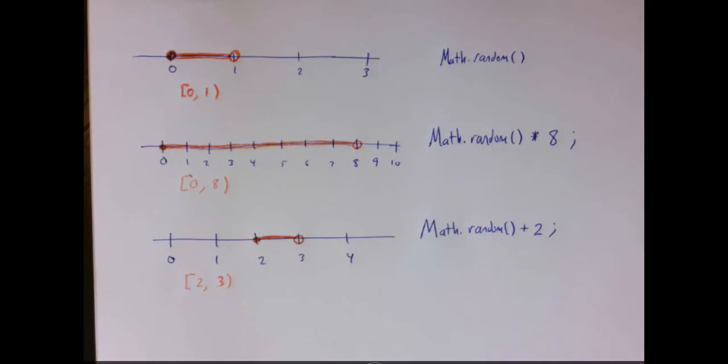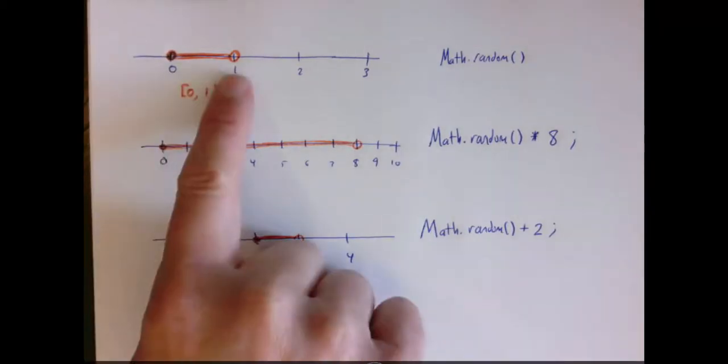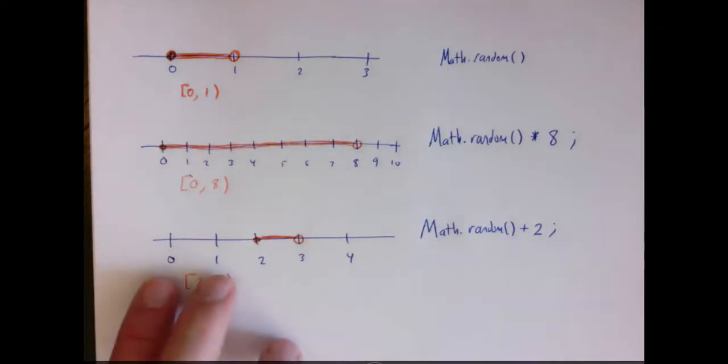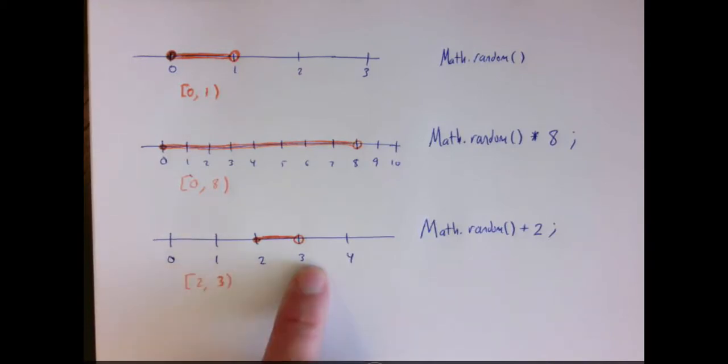If I add a value on the outside, that's the same thing as translating or shifting the original interval. So the original interval had a length of 1, and if I add 2, that's just shifted my low point and my endpoint up by 2. So the 0 becomes 2, the 1 becomes 3, and everything in between is also shifted by that same amount.